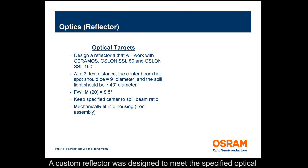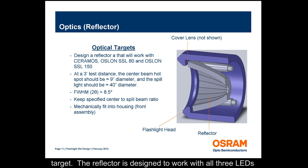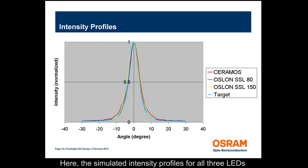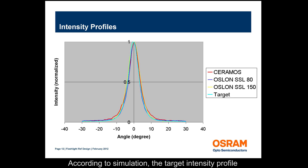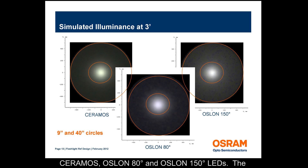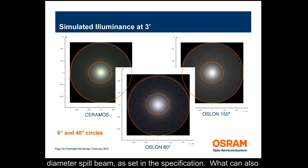A custom reflector was designed to meet the specified optical target. The reflector is designed to work with all three LEDs selected, meets the optical targets such as full width half max of 8.5 degrees, and complies with mechanical restrictions of the housing. Here the simulated intensity profiles for all three LEDs are compared to the target intensity profile. According to simulation, the target intensity profile can be achieved with all three LEDs. This slide shows the simulated illuminance at three feet, using Ceramos, Oslon 80 degrees, and Oslon 150 degrees LEDs. The orange circles highlight the 9-inch diameter center beam and 40-inch diameter spill beam as set in the specification. What can also be seen in this slide is how smooth the center and spill beams are.